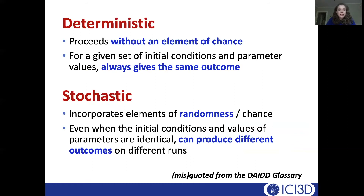Before we get into the details, I wanted to talk a little bit about the difference between deterministic and stochastic overall. Deterministic events proceed without an element of chance, meaning for the same set of initial conditions and parameters, there will always be the same outcome. Versus stochastic events or systems have an element of chance or randomness — you can have the same initial conditions and parameter values but get different outcomes depending on different runs of a simulation.